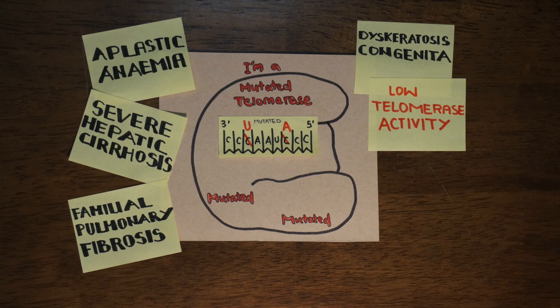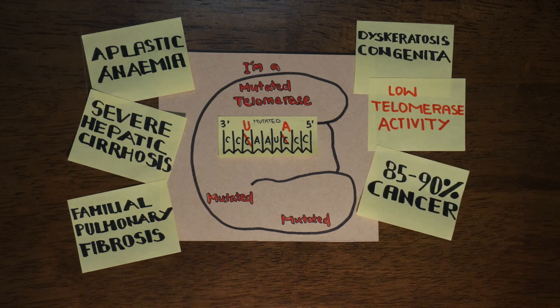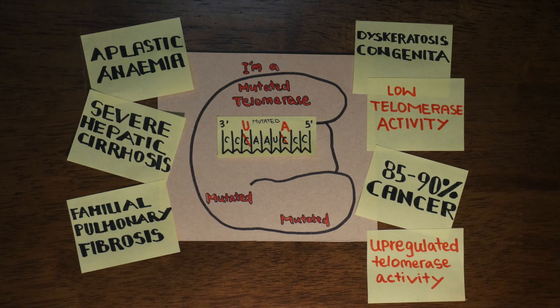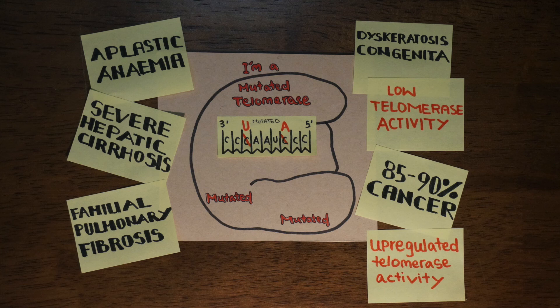In diseases such as dyskeratosis congenita, there is low telomerase function, while in approximately 85 to 90% of cancers, telomerase activity is upregulated, which enables the telomeres to maintain their length.